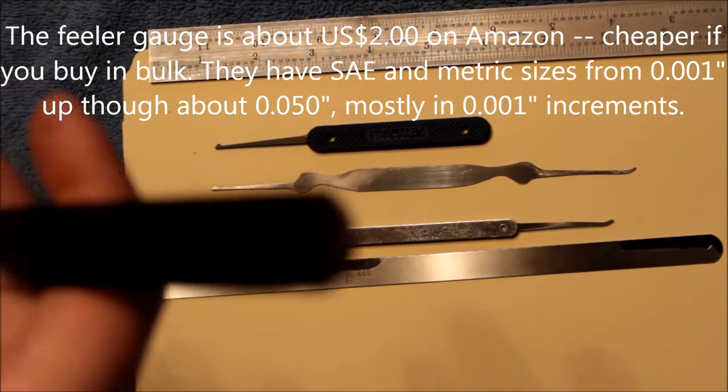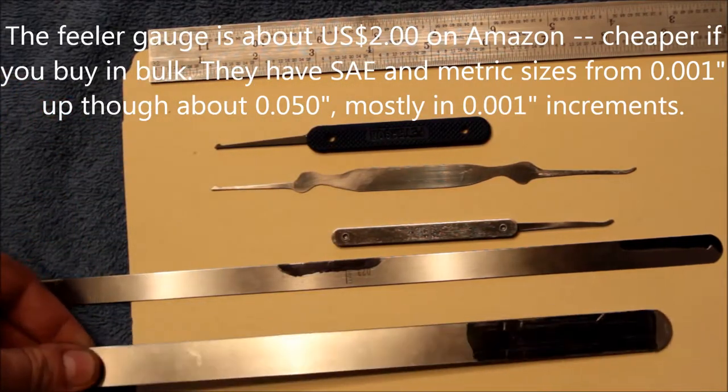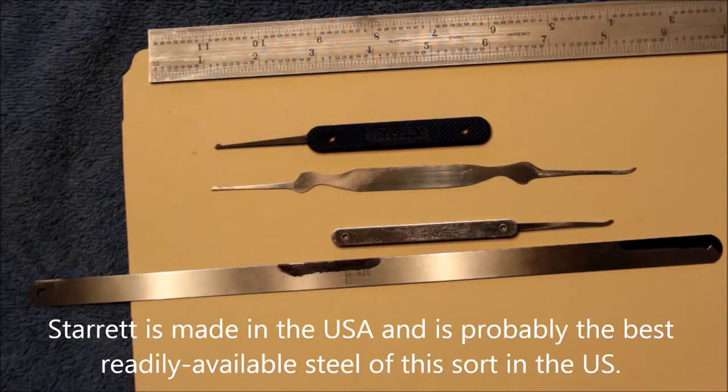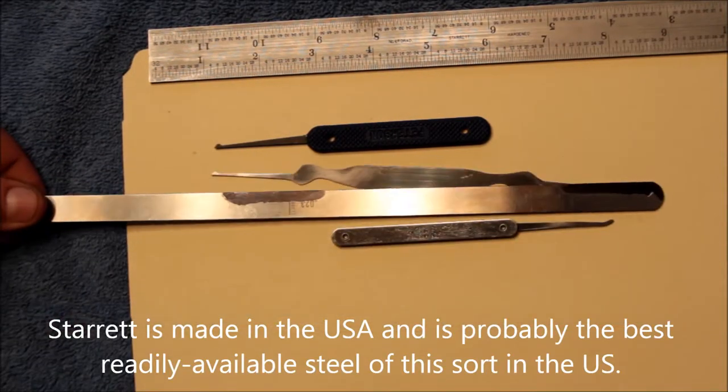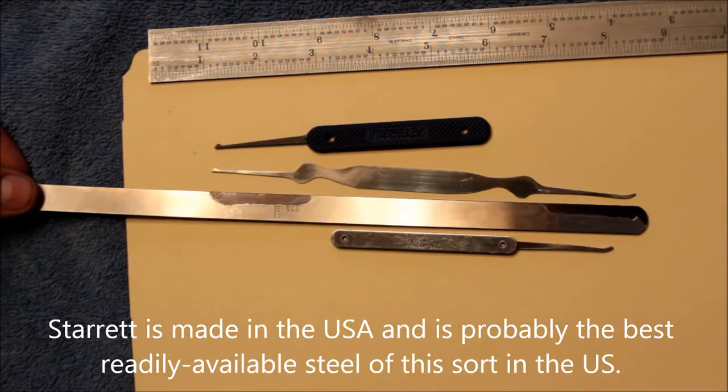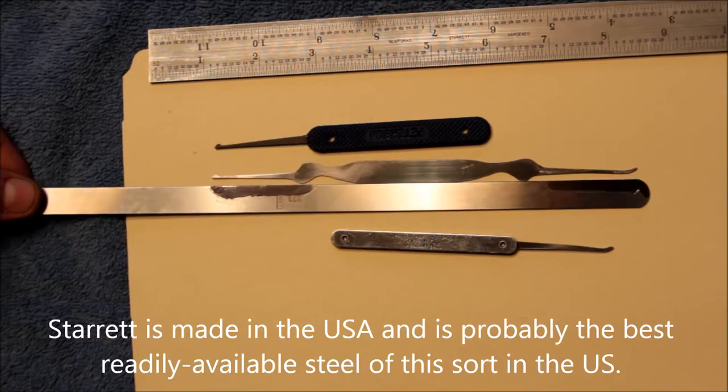This is not Starrett, but this is a 040, which I'm going to use to make some dimple picks. But you can see it's laid out pretty much exactly like that one, except I've got it backwards.